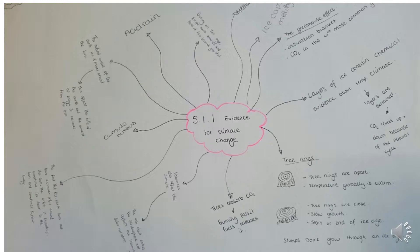Theme 5.1.1 asks: what is the evidence for climate change? You need to look at climate change in terms of the cyclical nature of glacial and interglacial periods. Interglacial periods have occurred about every 10,000 years, and we've noticed this since the past 420,000 years.